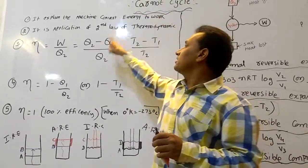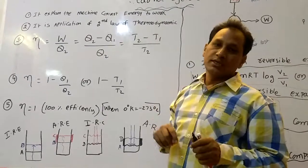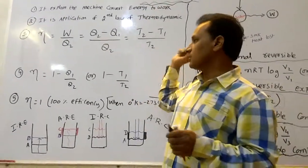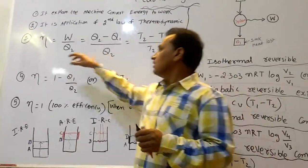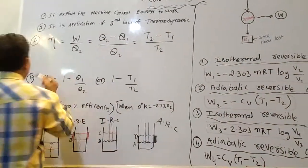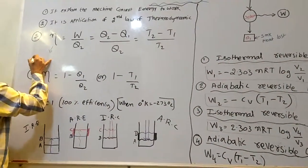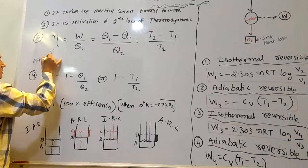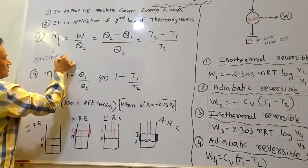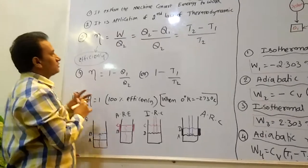The Carnot cycle is the application of the second law of thermodynamics. Nu, which means the efficiency of the engine, is the key quantity we are going to calculate.